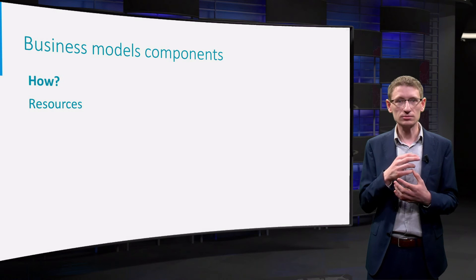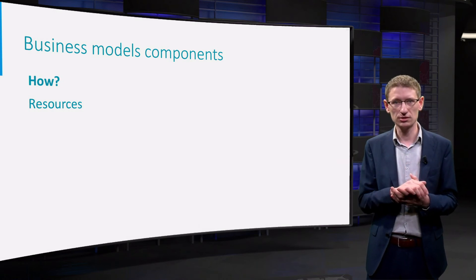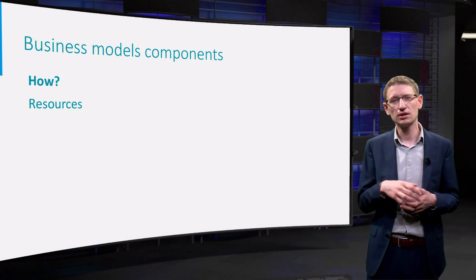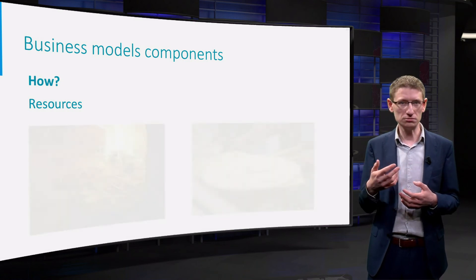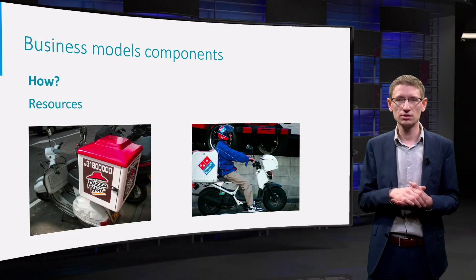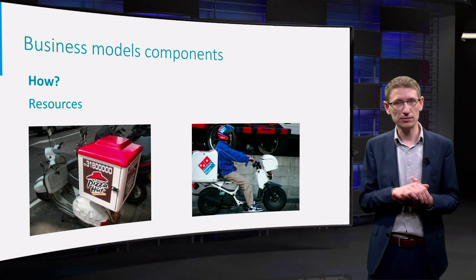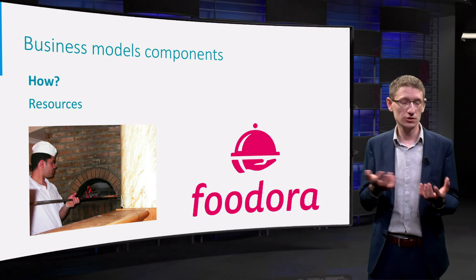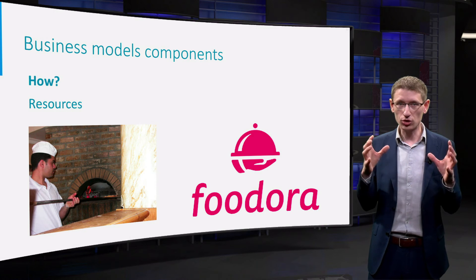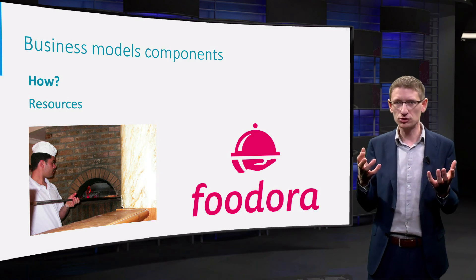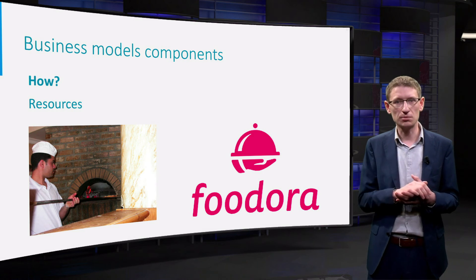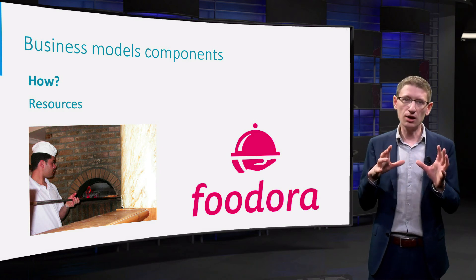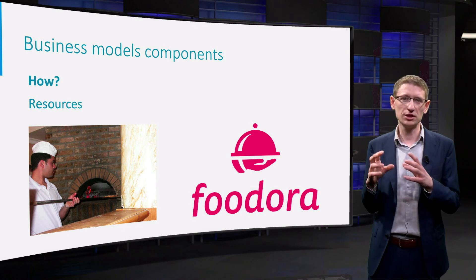The third question is how — how do you create, produce, and distribute your offering? You'll probably need some resources, like space, machines, technologies. Think about the pizza delivery company: what they need is an oven, pizza dough, scooters, and human resources — delivery guys, pizza bakers, phone operators — and maybe also a website so that people can order pizzas online. Maybe you control all those resources yourself, but maybe you have to rely on your partners. For example, the pizza company could outsource the website ordering to a company like Foodora. So the how is all about how you organize production and delivery of value.